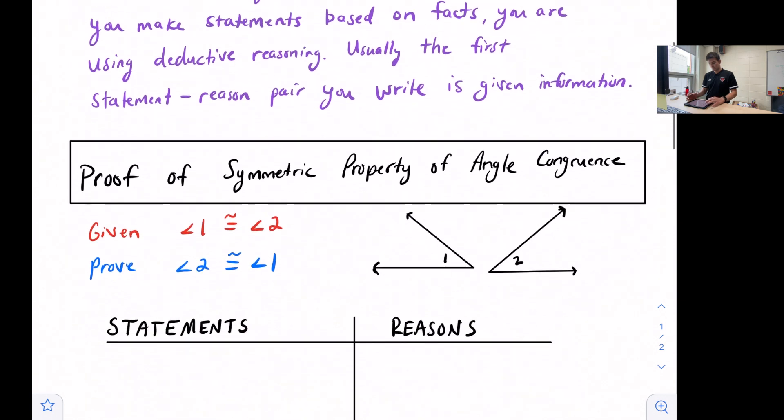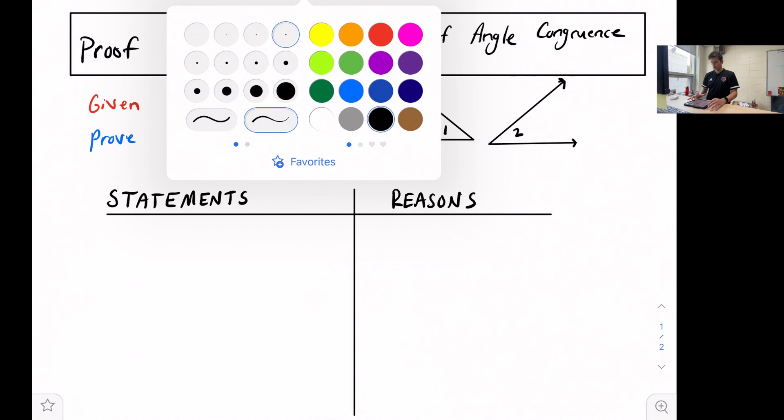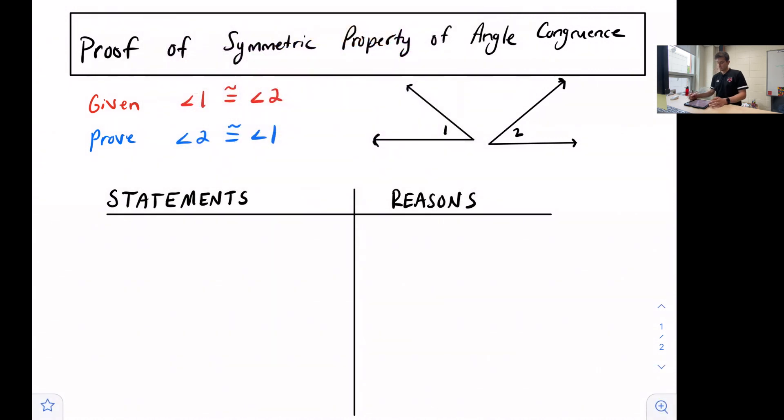We're going to take an example and create a two-column proof in this video. We're going to look at a proof of symmetric property of angle congruence. The symmetric property we looked at in a previous video we're going to apply today with these two angles. Whenever we're looking at a proof, we're always given some information and they want us to prove something else.